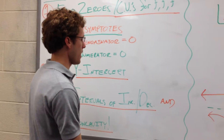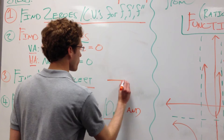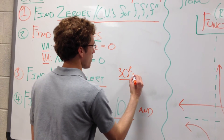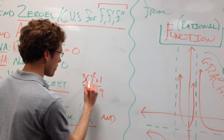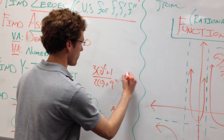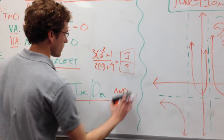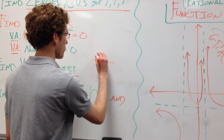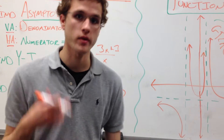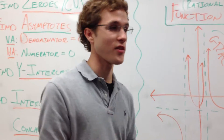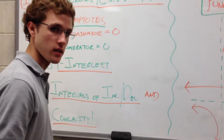The next step is to find our y-intercept. We do this by replacing every x in the function with zero. For example, with 3x squared plus 1 over 2x plus 9: replacing x with zero gives us 1 on the top and 9 on the bottom, so our y-intercept is 1/9. Note that you don't always have a y-intercept — if substituting zero gives a zero in the denominator, that means the y-axis itself is a vertical asymptote.